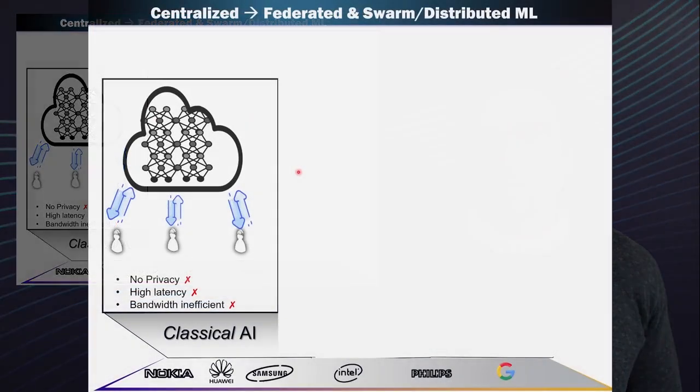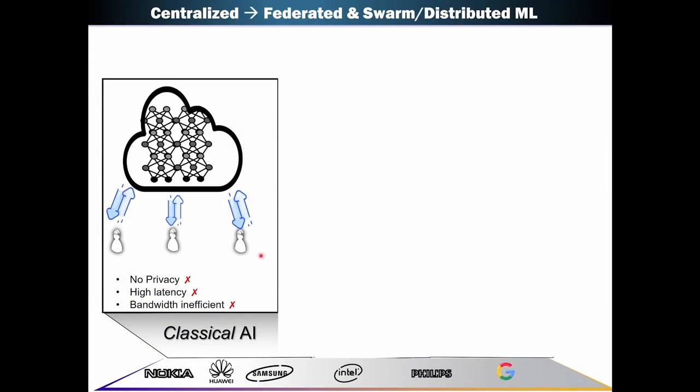So it all goes back to centralized machine learning essentially, where we had a bunch of devices which were communicating their raw data, this could be photos of course, to the cloud.